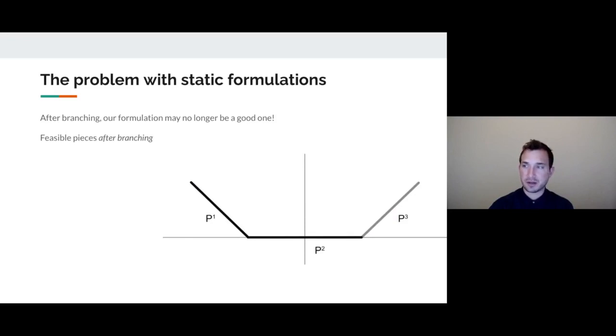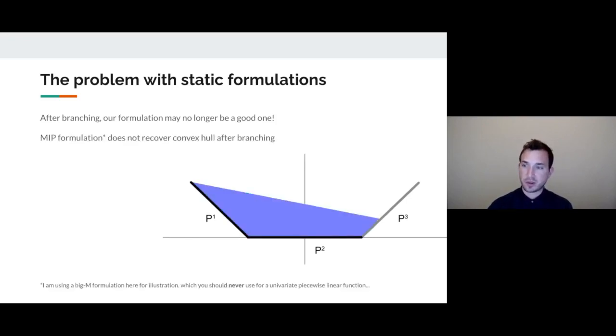However, once I start branching, the number of pieces which are feasible reduces. Now at this node, I might only have the first and the second piece which are feasible, and the third is no longer under consideration. If I were to build a strong formulation for just the first and the second piece, I would get something that looks like this. However, based on how I originally formulated things in my static formulation, I might instead get a formulation that gives me this.